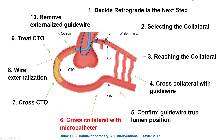This is the overview of the retrograde approach, starting from the decision to go retrograde in various steps, and the step we'll be focusing on today is that of the collateral crossing with the microcatheter after the guide wire has crossed the collateral.